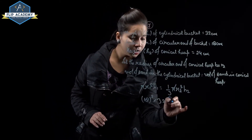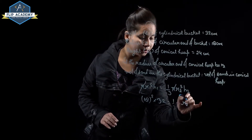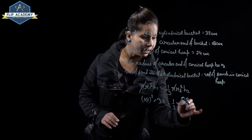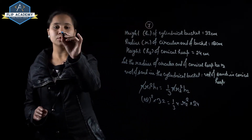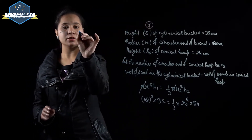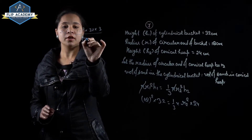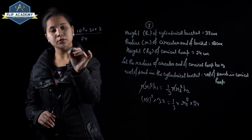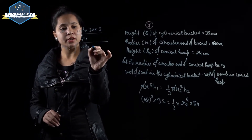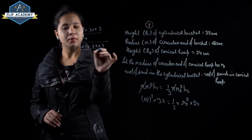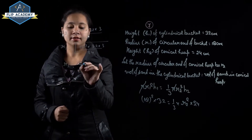So r2² = (18² × 32 × 3) / 24. Therefore r2 = √(18² × 32 × 3 / 24) = 36 cm. The radius of the conical heap is 36 cm.